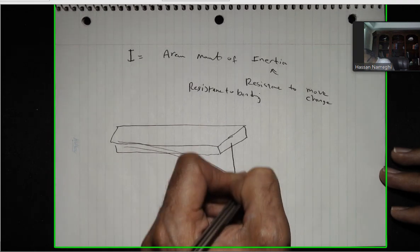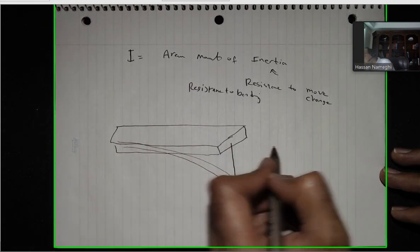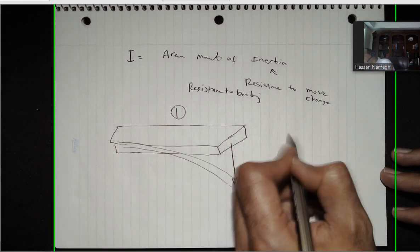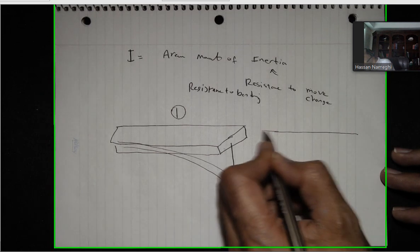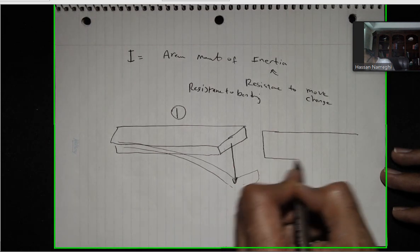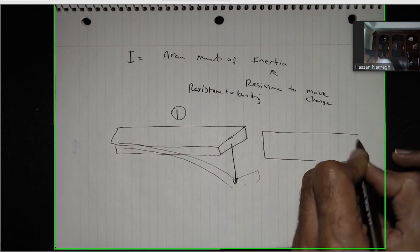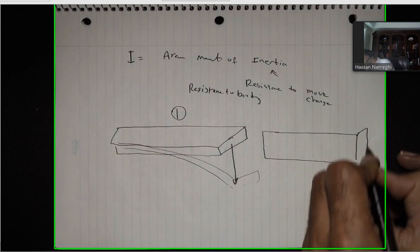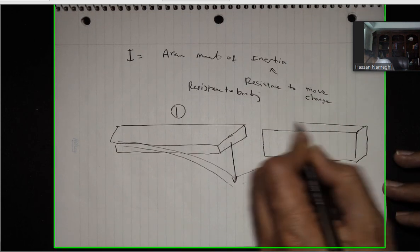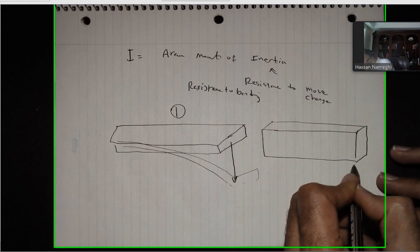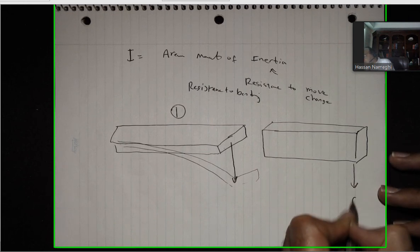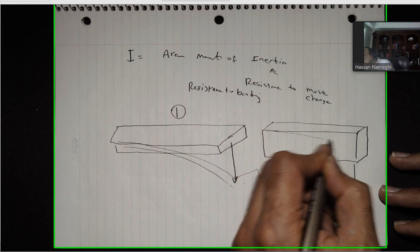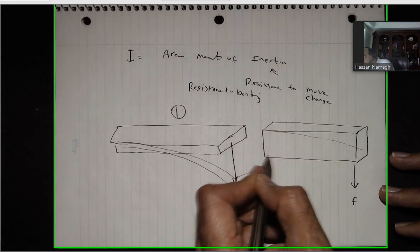But if the same ruler — if I just flip it, instead of using it like this (position one), if I flip the ruler to this position and apply the force to it, it doesn't even bend much. So it bends like this — not much of bending.